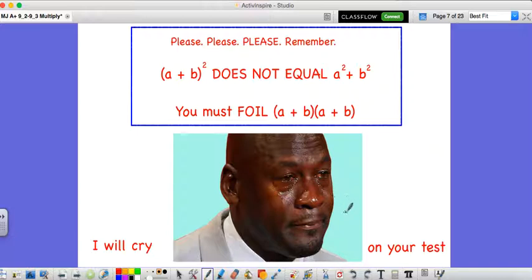So if you do this on your test, I'm actually going to cry. You will see tears. This is MJ. My name is Max Johnson. This is my version of MJ. I'm going to be crying all over your test. And with that note, we are done with 9.2 and 9.3.